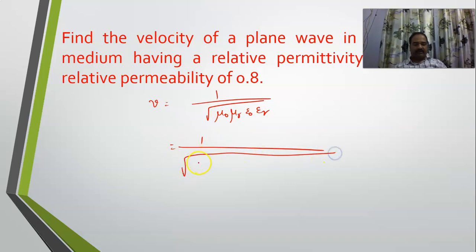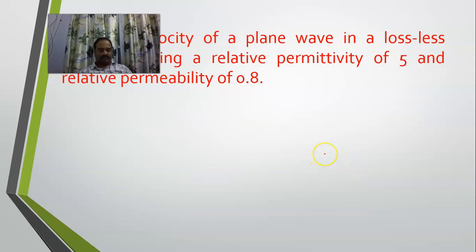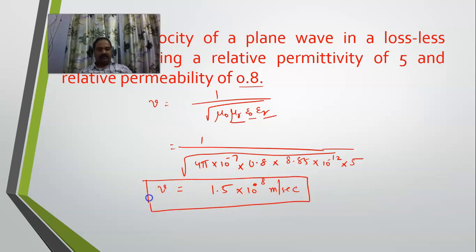μ₀ = 4π × 10⁻⁷, μᵣ = 0.8 (relative permeability), ε₀ = 8.85 × 10⁻¹², and εᵣ = 5 (relative permittivity). Solving this gives v = 1.5 × 10⁸ meters per second. This is how we determine the velocity of a plane wave in a lossless medium. Hope you solve the remaining homework problems, and thank you.